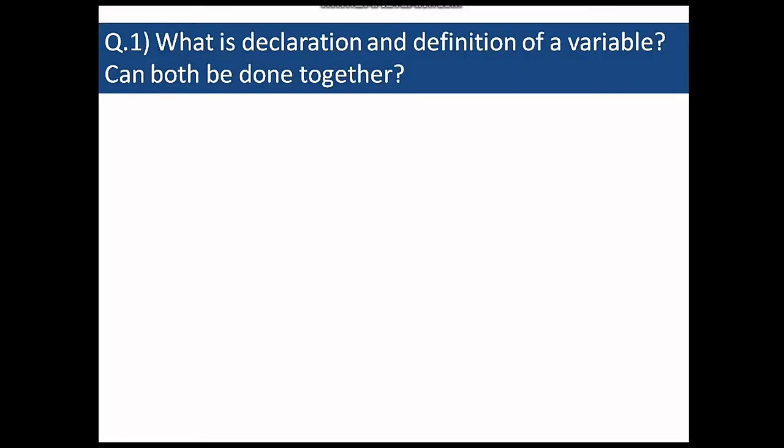The first question is what is declaration and definition of a variable and can both be done together. So first we'll see what is declaration and definition. When you just say int a we say we are declaring a variable because we are just telling the compiler that a is a variable of type integer.